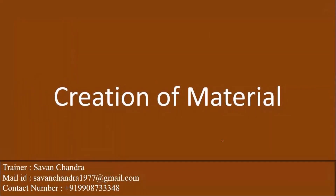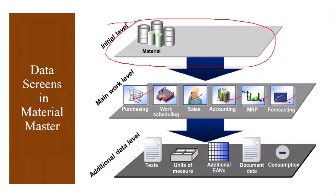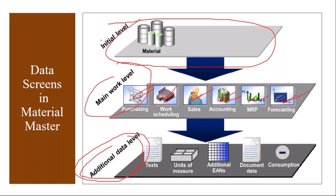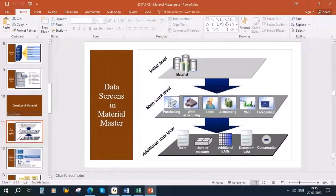Now we will start with creation of a material in the system. When you create the material, at the initial level you enter the material number, and then at the main working level you maintain the data in different views — such as purchasing, work scheduling, sales, accounting, MRP, and forecasting. On top of that, you can maintain additional data. These are the three levels of material creation.